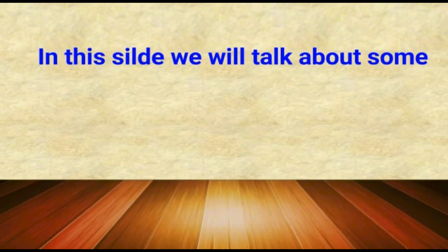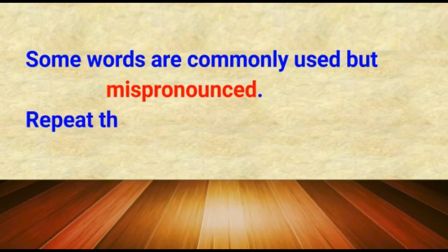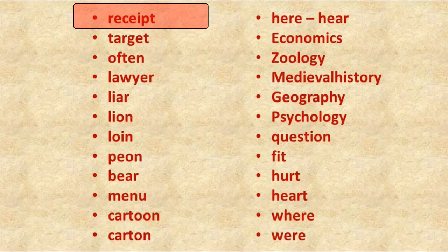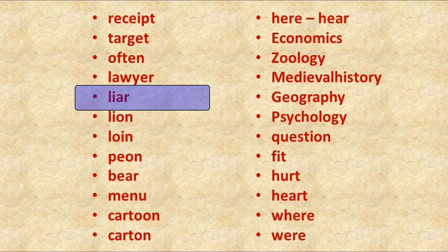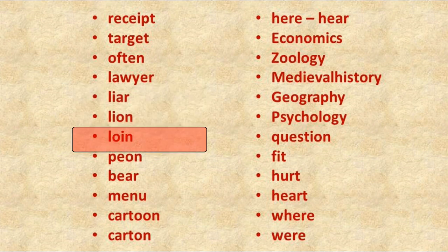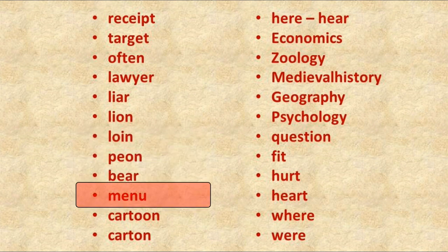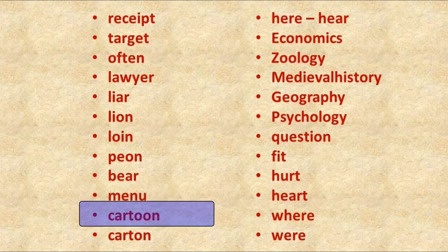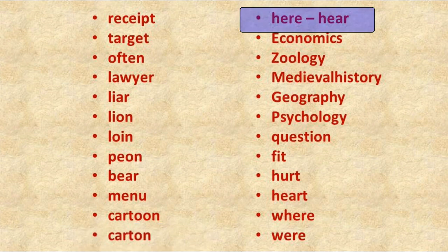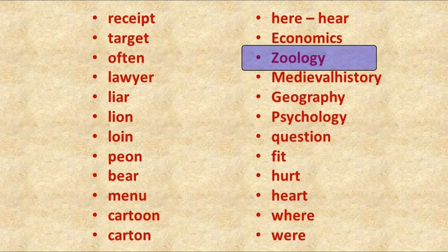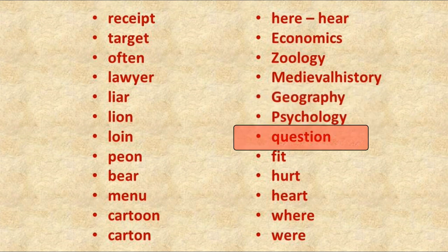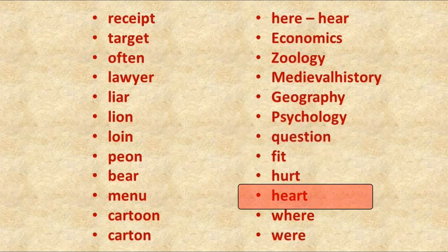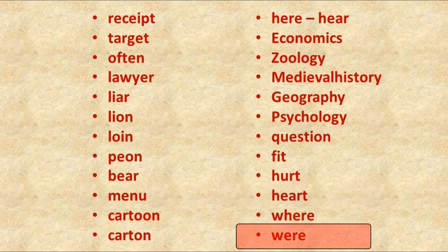In this slide, we will talk about some common errors — words that are commonly used but mispronounced. Repeat these words after me: receipt, target, orphan, lawyer, liar, lion, loin, pin, bear, menu, cartoon, carton, here, economics, zoology, medieval history, geography, psychology, question, fit, hurt, heart, where, were.